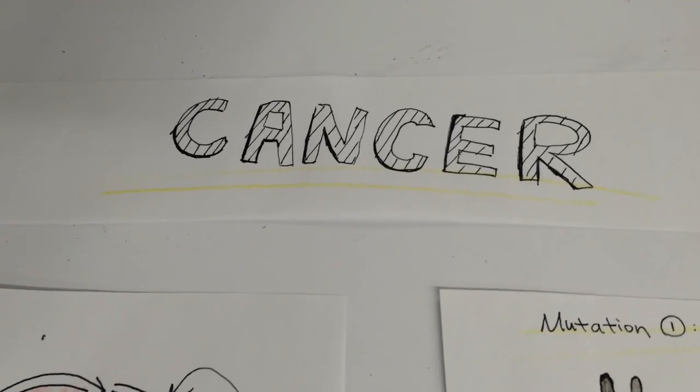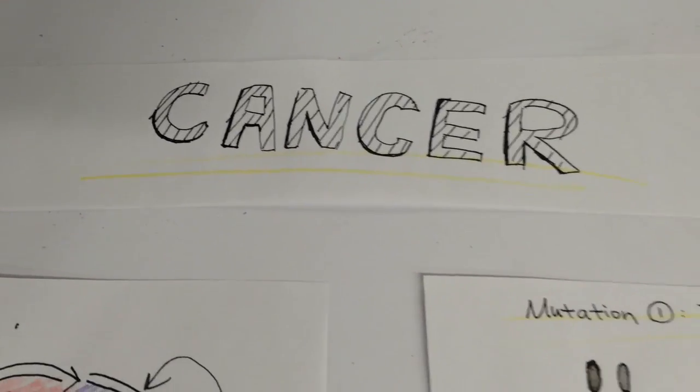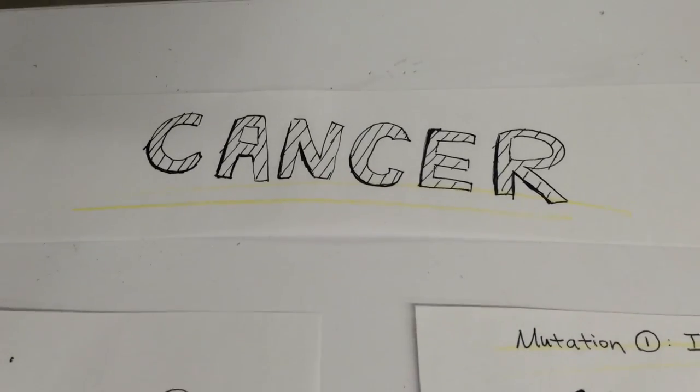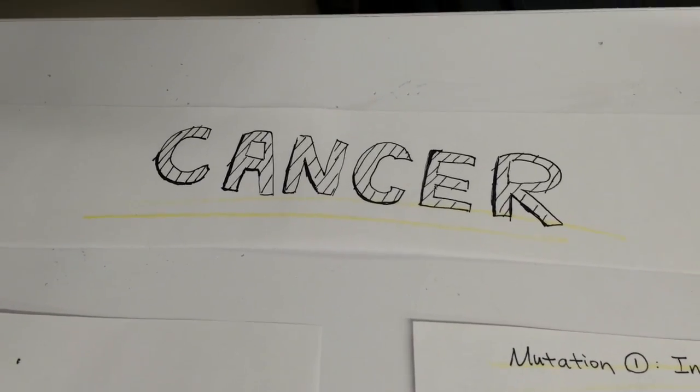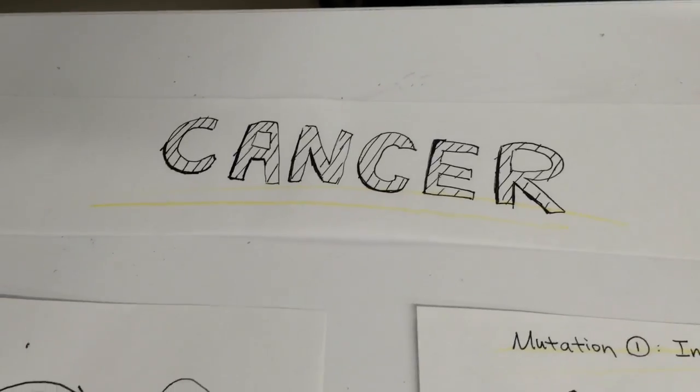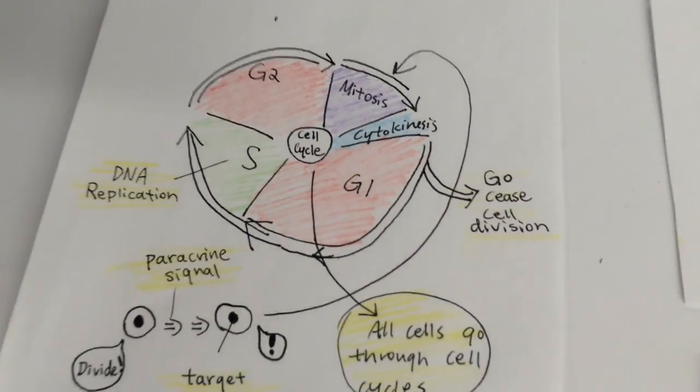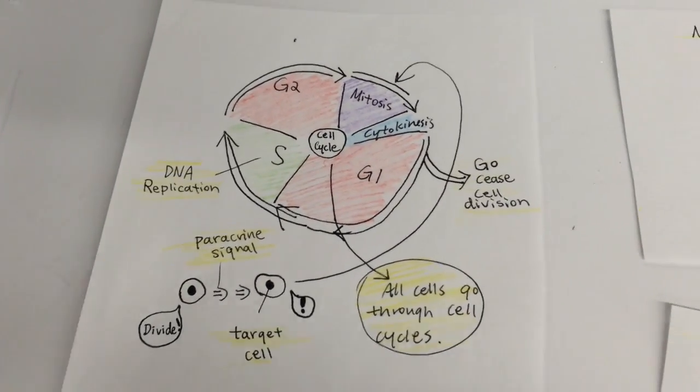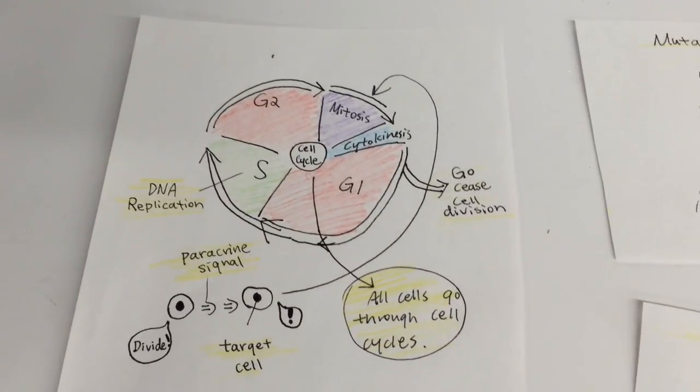What is cancer and how does it arise? This video explains the cause and effect of cancer on a cellular level. Cancer is essentially the result of mutations in certain genes that control the regulation of the cell cycle in our cells.